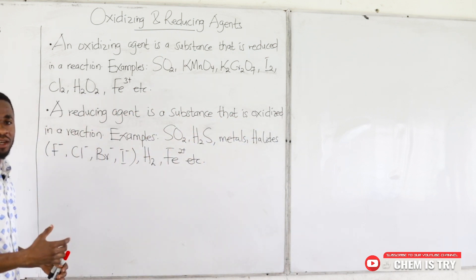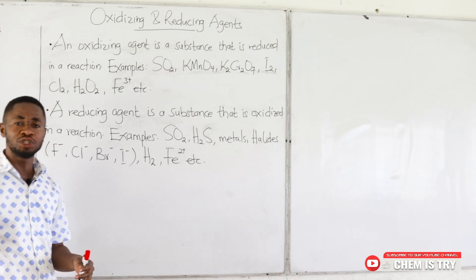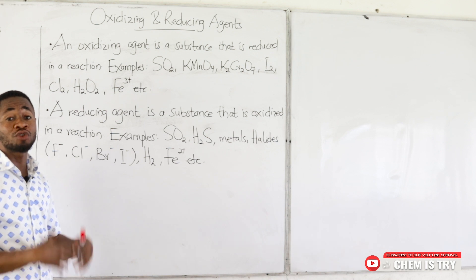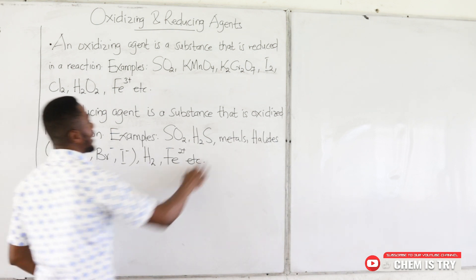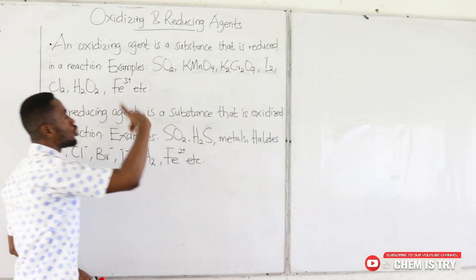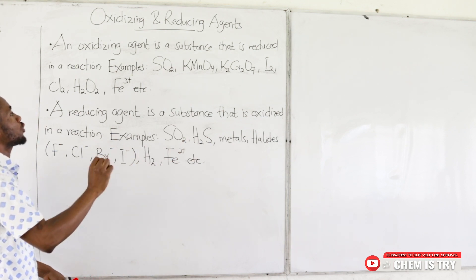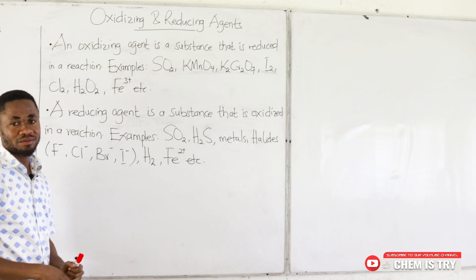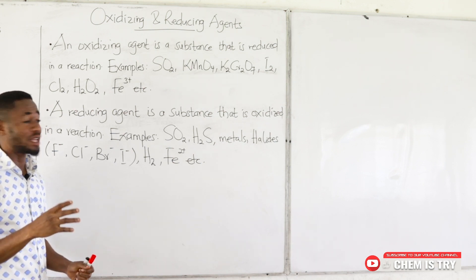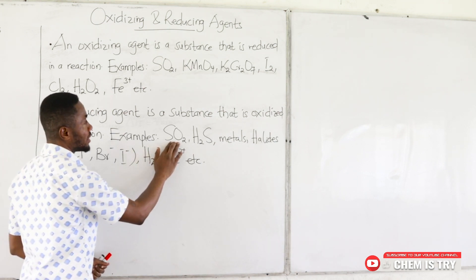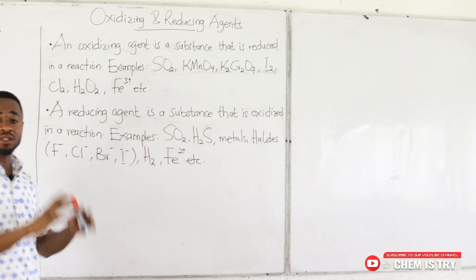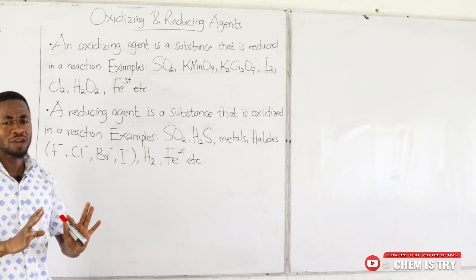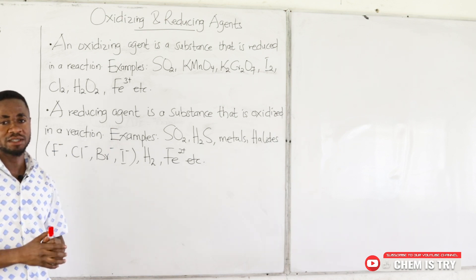The substance whose oxidation number is decreasing is undergoing reduction, and we call it the oxidizing agent. Note that sulfur dioxide (SO₂) can act as both an oxidizing agent and a reducing agent, depending on the type of reaction.